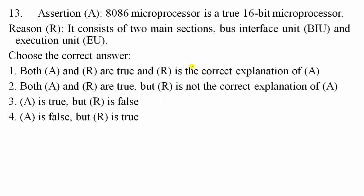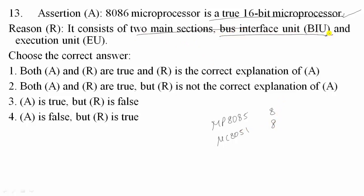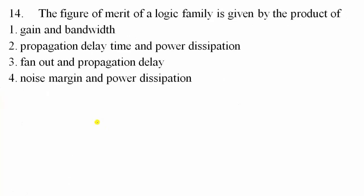Question 13: The 8086 microprocessor is a true 16-bit microprocessor — this assertion is correct. The 8085 is an 8-bit processor and the 8051 is an 8-bit microcontroller. The reason given — that it consists of a Bus Interface Unit (BIU) and Execution Unit (EU) — is correct but does not properly explain why it is a 16-bit processor. So option 2 is correct: assertion is true but reason doesn't explain the assertion.